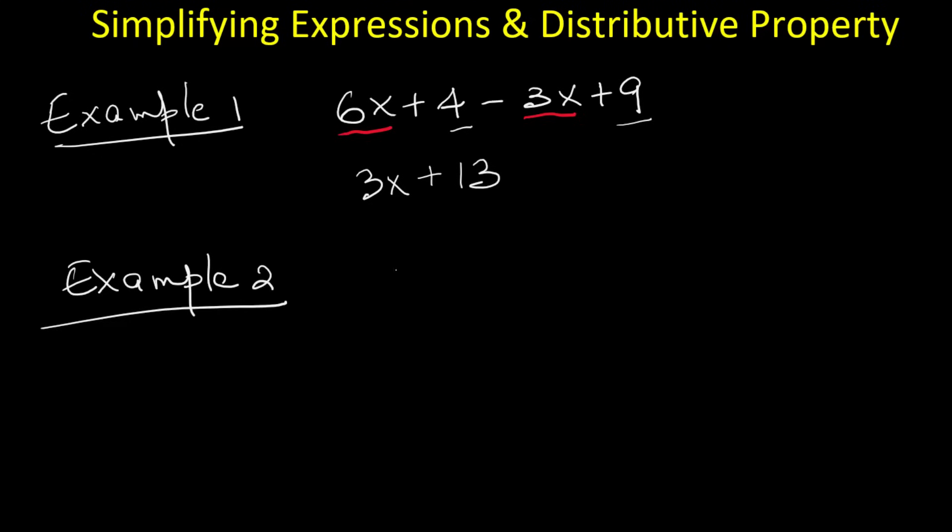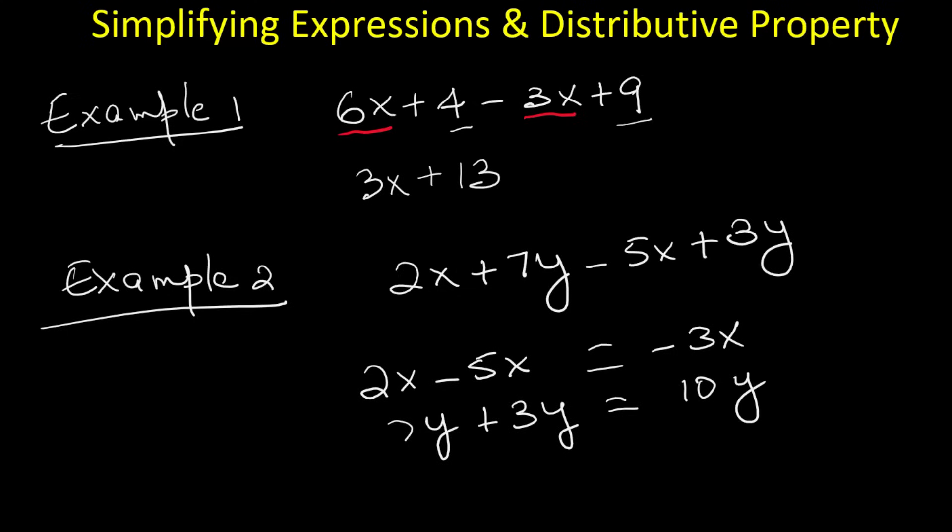Example 2. Now let us simplify 2x plus 7y minus 5x plus 3y. Here we group similar terms. 2x and negative 5x are like terms. 2 minus 5 is negative 3, so that gives us negative 3x. 7y and 3y are like terms. 7 plus 3 is 10, so we get 10y. So the final result is negative 3x plus 10y.